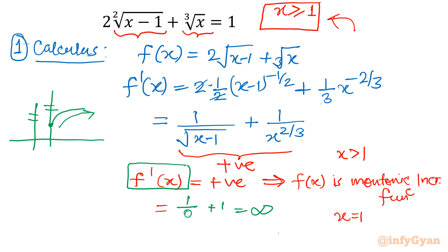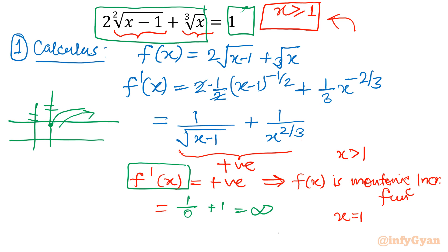The conclusion is very clear. The right-hand side is one constant function, and the left-hand side is one monotonic increasing function. If you draw the line y = 1, at most one intersection point would be there. If one function is monotonic increasing and another is constant, you will have only one solution.